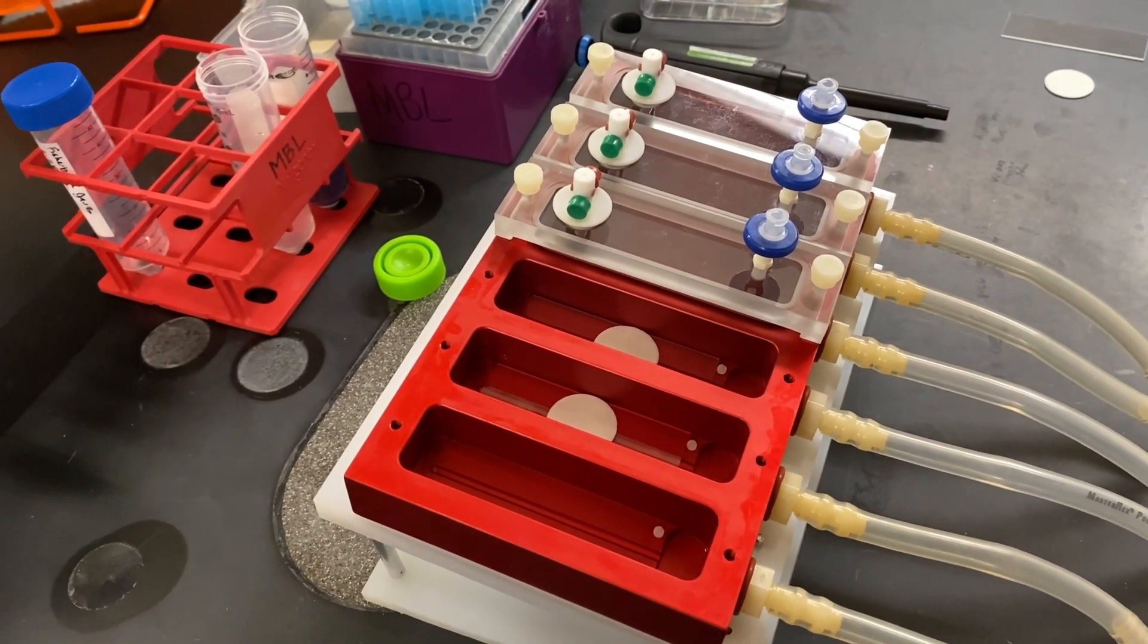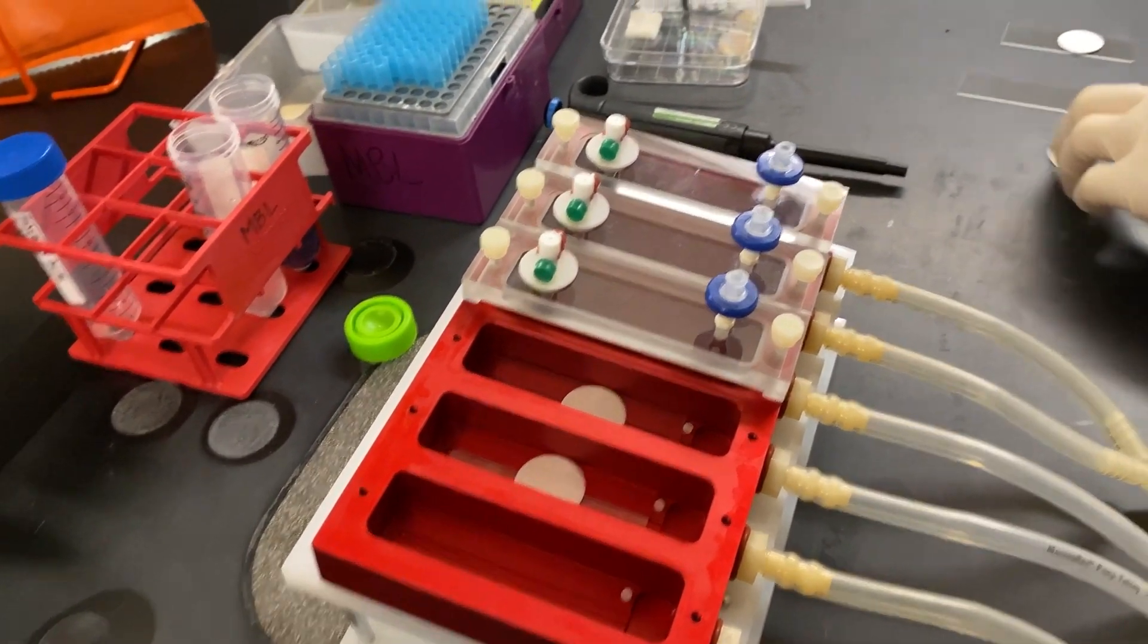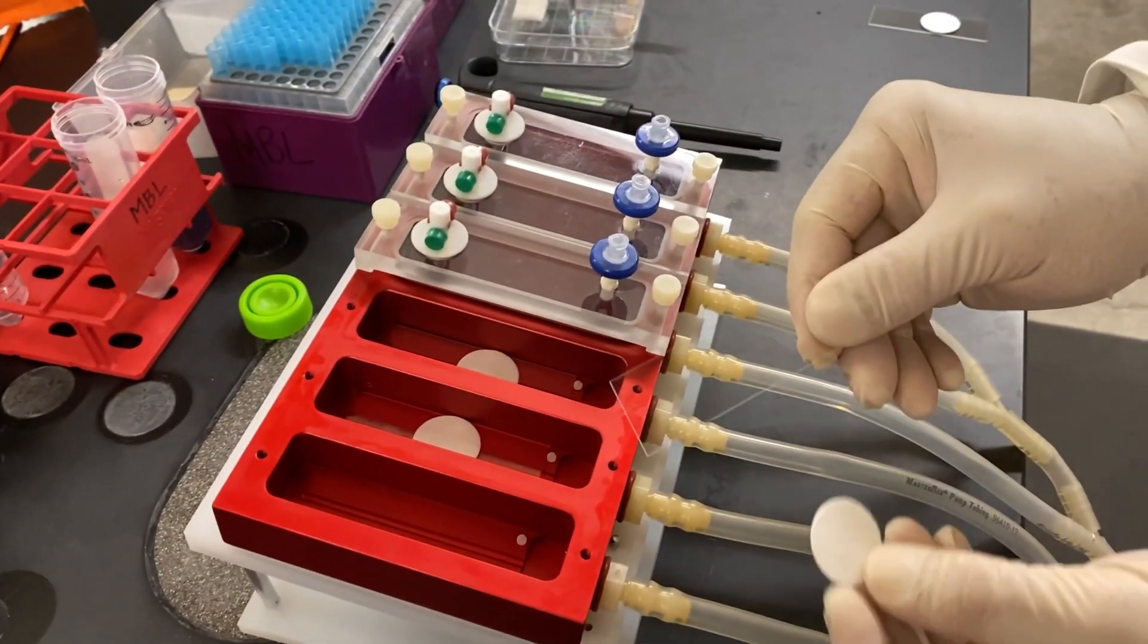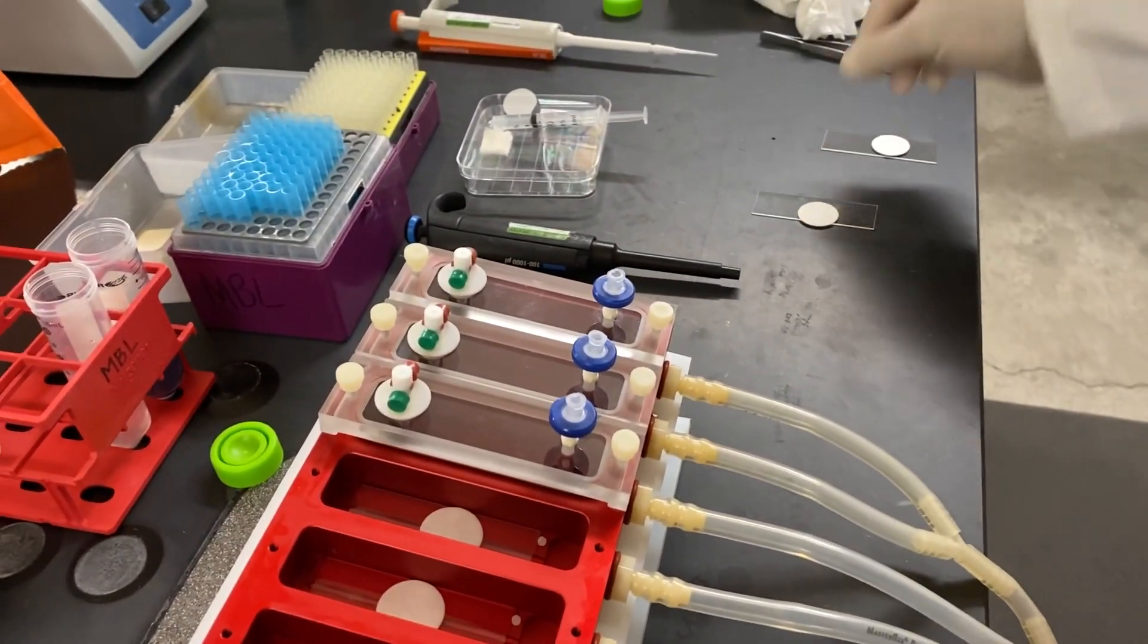First, we prep the reactor by gluing an absorbent pad to a glass slide, which is then placed in the reactor and autoclaved.